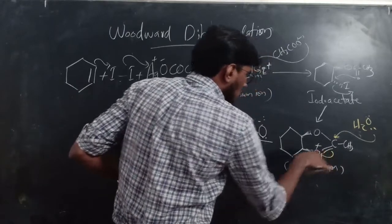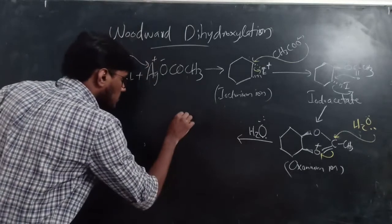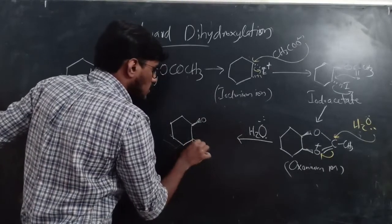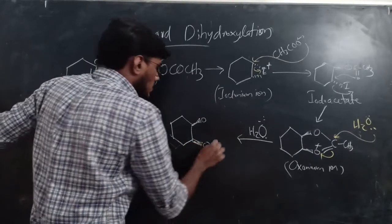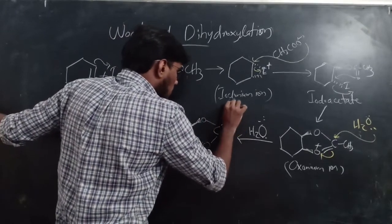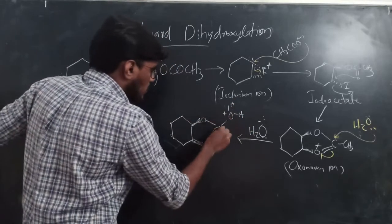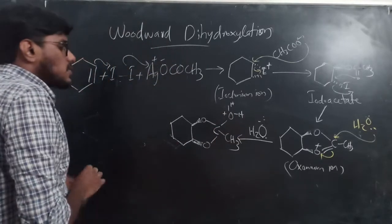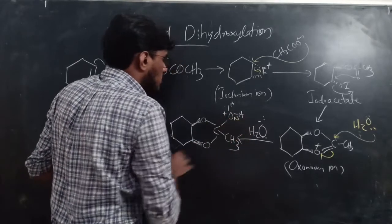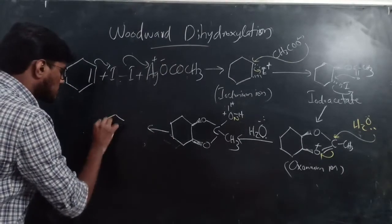After water attacks the oxonium ion, a proton (H⁺) leaves from the water and the bond shifts, forming an intermediate with an OH group and a remaining acetate group on the adjacent carbon. This gives a compound bearing both an OH and an OCOCH3 group.